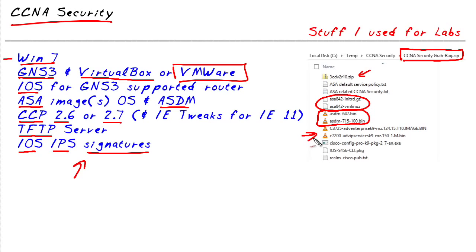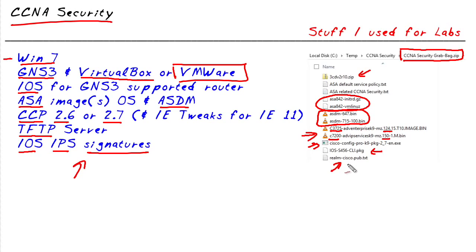Here are a couple of iOS images that are supported by GNS3: there's a 3700 series running 12.4 and a 7200 series running 15.x. Here's CCP version 2.7 — Cisco Configuration Professional. This iOS S456 is a signature package for iOS-based IPS, and this last file is the public key from Cisco that's required to implement the iOS-based IPS.